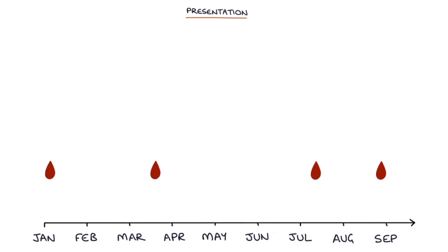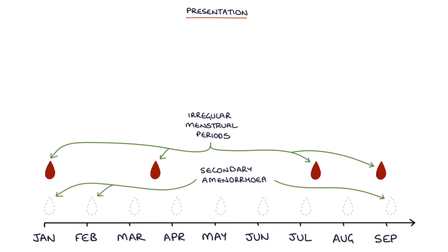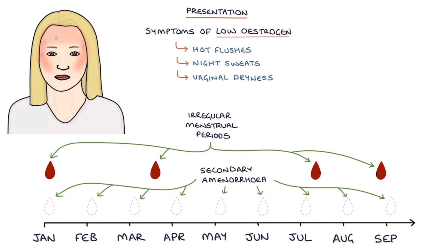So how does it present? Premature ovarian insufficiency presents with irregular menstrual periods, a lack of menstrual periods which is called secondary amenorrhea, and symptoms of low estrogen levels such as hot flushes, night sweats, and vaginal dryness. So it presents with the normal symptoms of a menopause.